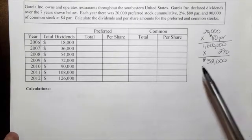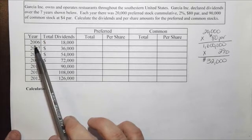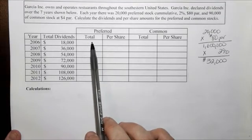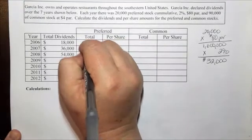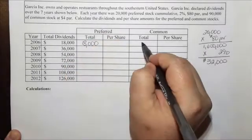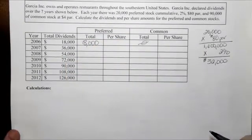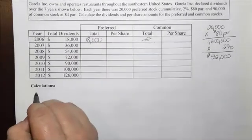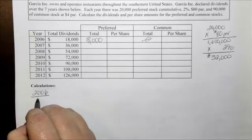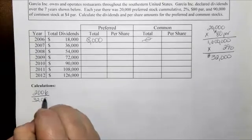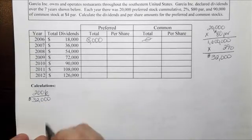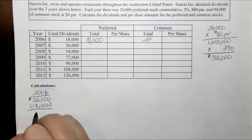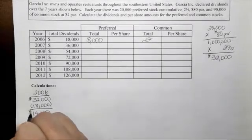In 2006, only $18,000 in total dividends were declared. So the preferred stockholders are going to get all $18,000 and the common stockholders are going to get zero. That leaves us with a balance — in 2006 they should have received $32,000, but we only paid out $18,000, so that leaves a $14,000 balance owed to preferred stockholders.